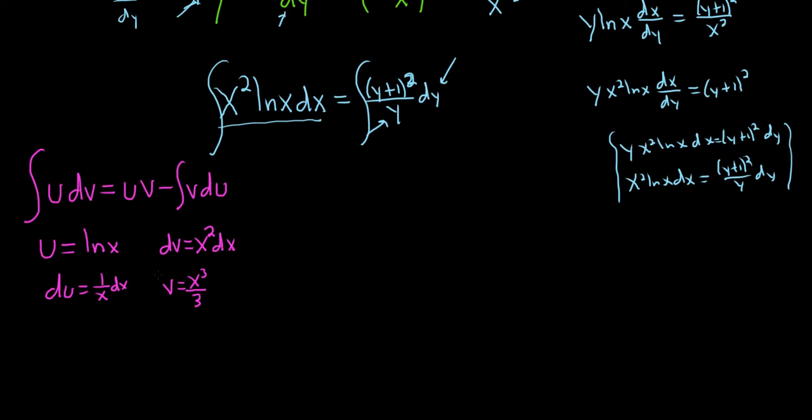So now let's do it. So it'll be uv minus the integral of v du. So uv is x cubed over 3 ln x, minus the integral of v du. So we can pull out the 1 third. And then x cubed over x, it's going to give us x squared dx. Really nice stuff.